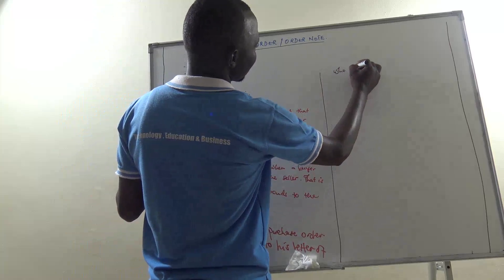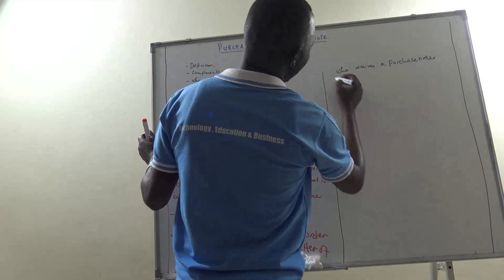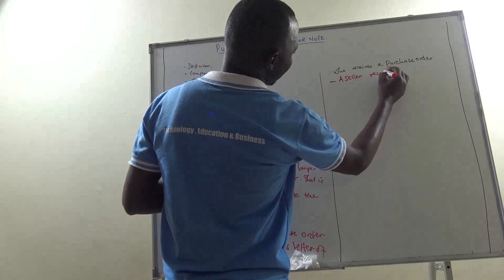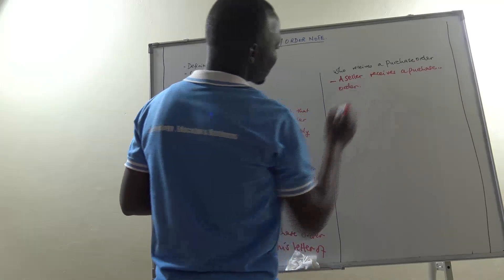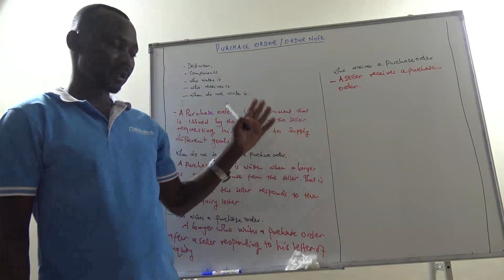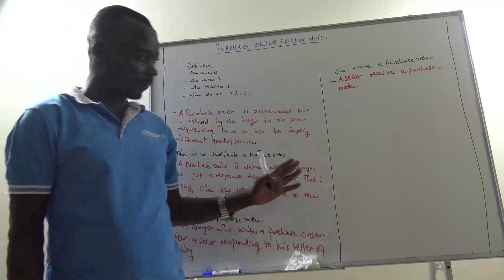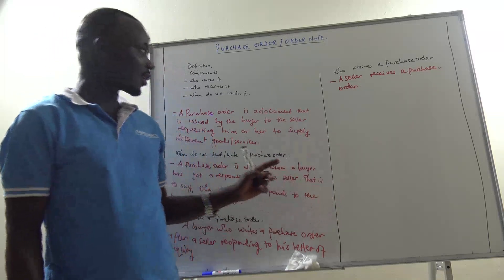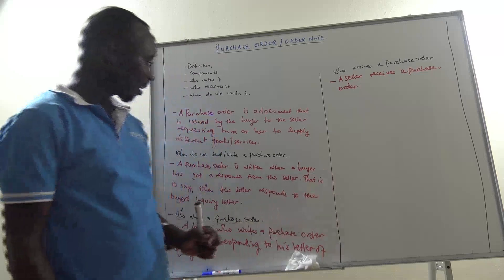Who receives a purchase order? It is the seller who receives a purchase order, because he is the one who is sending the goods, and he is the one who responded to the letter of inquiry through presenting or writing a quotation, a price list, a price current, or any other document used to respond to the letter of inquiry. After the buyer decides to buy, the buyer sends a document ordering the seller to supply different goods or services.